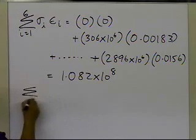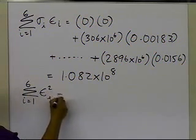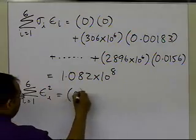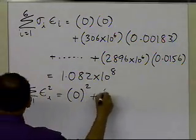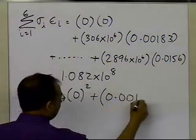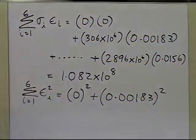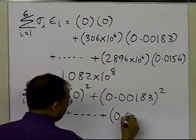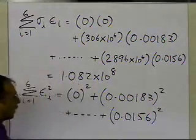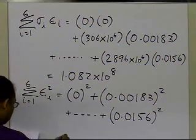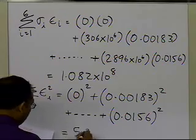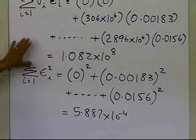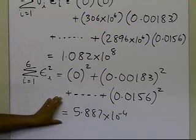The summation of εᵢ² for i equals 1 to 6 is computed by squaring each strain value and adding them up. The first strain is 0 squared, the second is 0.00183 squared, and the last is 0.0156 squared, with three more in between. This summation of all squares of the strain values turns out to be 5.887×10⁻⁴. Those are the only two quantities needed to calculate the Young's modulus.